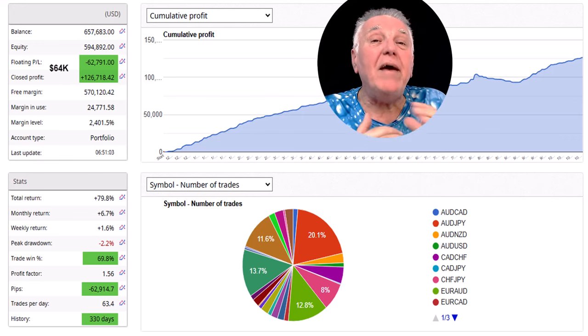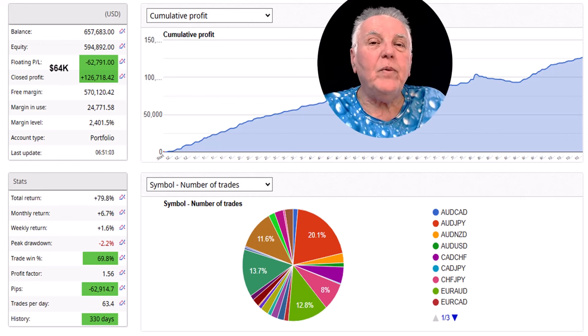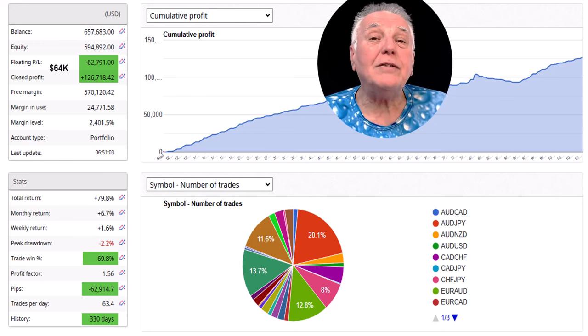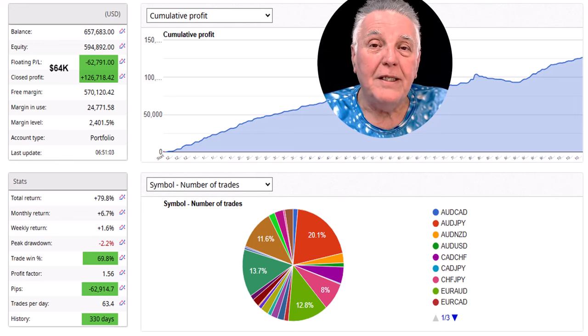Here we have an account that has generated over $64,000 in profit, and if you look lower down on the account you'll see that there are minus 62,000 pips being generated.